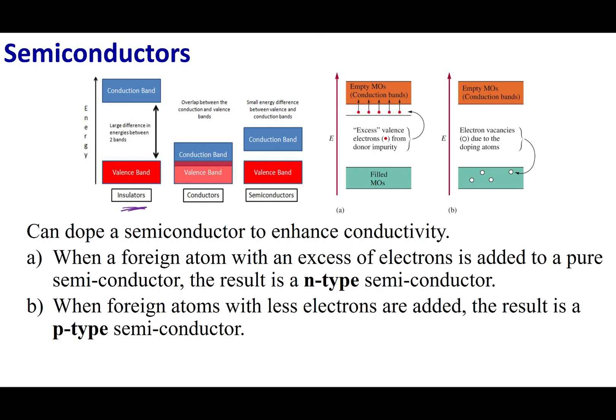For conductivity to occur, I need mobile electrons — electrons that can jump from one orbital to another within the bands themselves. In an insulator, there is a large difference between the conduction band and the valence band. The valence band is always filled, so all my electrons are in an orbital inside the valence band and they have nowhere to go. My electrons are not mobile, which explains why insulators don't conduct electricity.